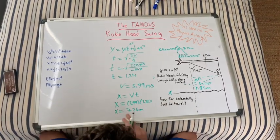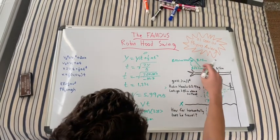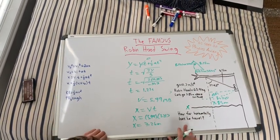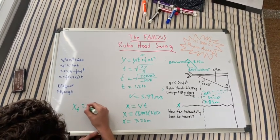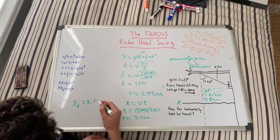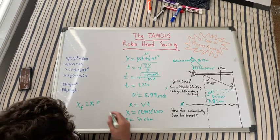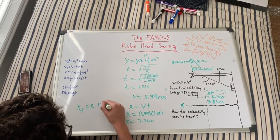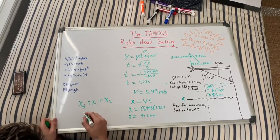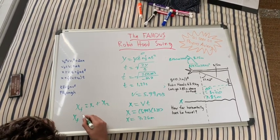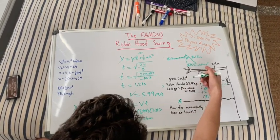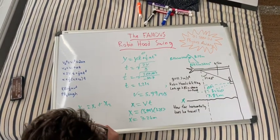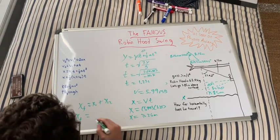Now all we have to do is add this to this part that we found in the very beginning to get our final answer. So x_final equals x_initial plus this part, or x₁ plus x₂. And it's going to be 8.15 sine 37.42°, which is about 4.95 meters, plus 7.26 meters...